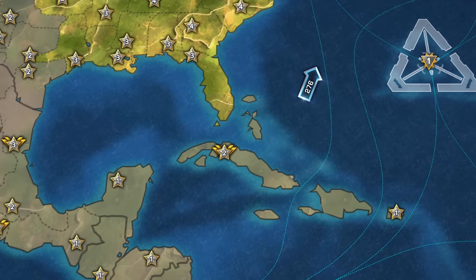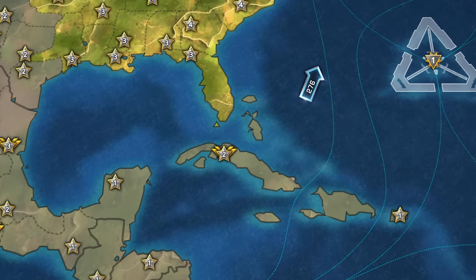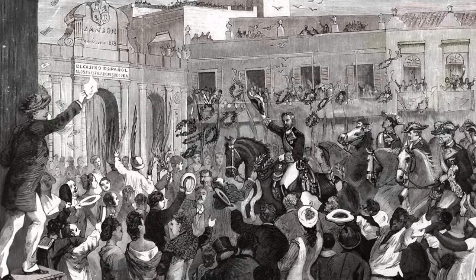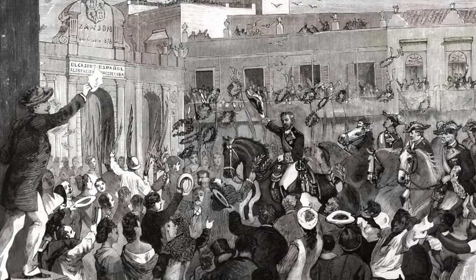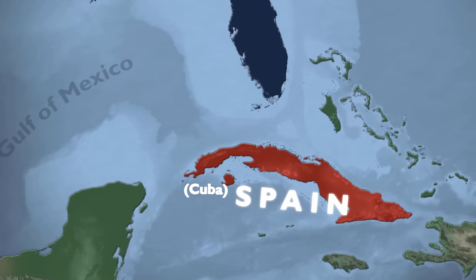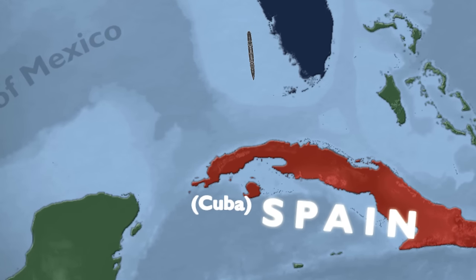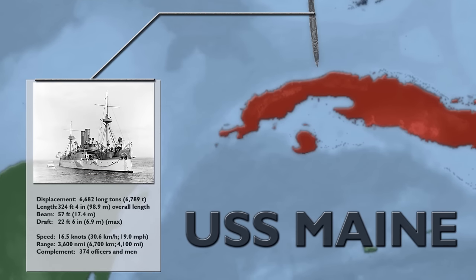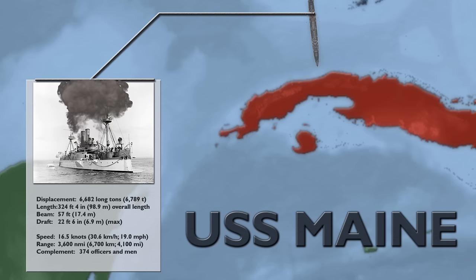US journalism became focused on the events happening with their neighbors, especially due to the significantly harsh reaction from Spain. Some newspapers utilized yellow journalism to push the country in the direction of joining the conflict, and the urge was further fortified by the sudden and unexplained sinking of the USS Maine in the Havana Harbor. The United States battleship, which cost upwards of $2 million, fell victim to an unanticipated explosion on February 15, 1898, which killed 260 of the American crew members aboard.